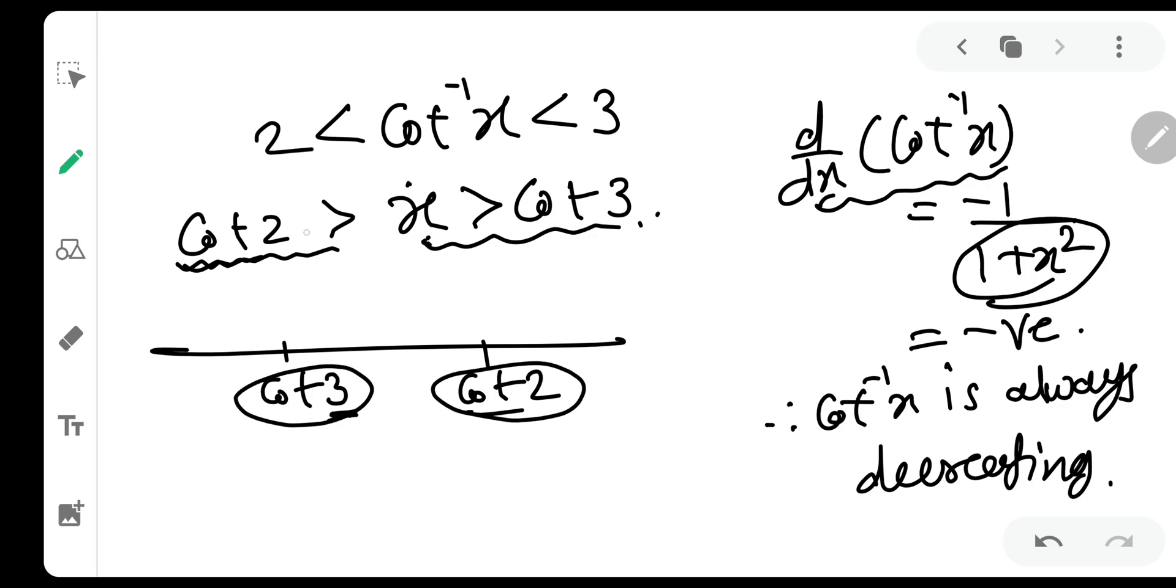Over here, it is said that x is less than cot 2. x is less than cot 2. And over here, it is said that x is greater than cot 3. So, x is greater than cot 3.